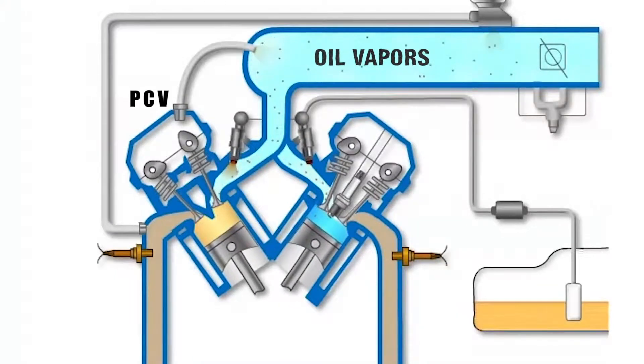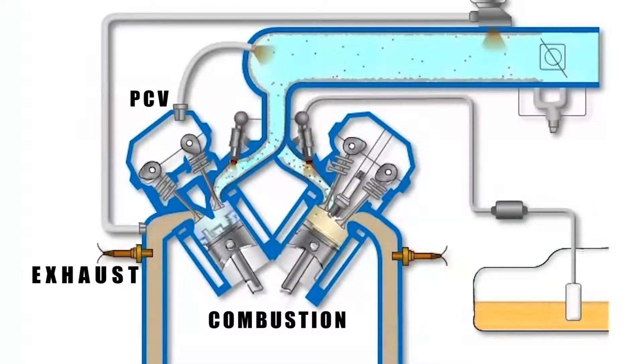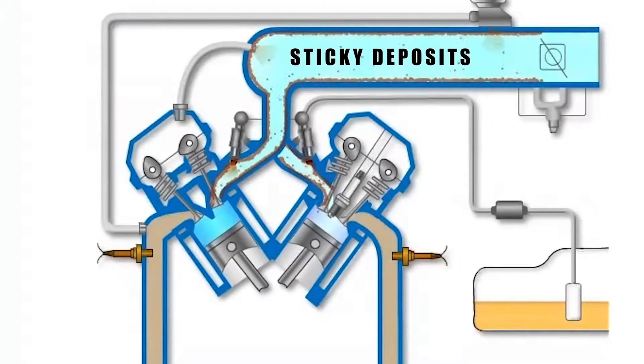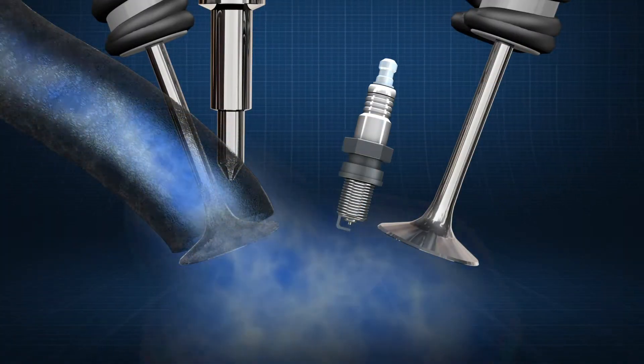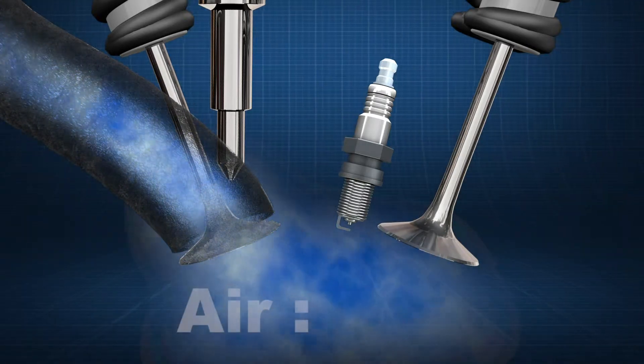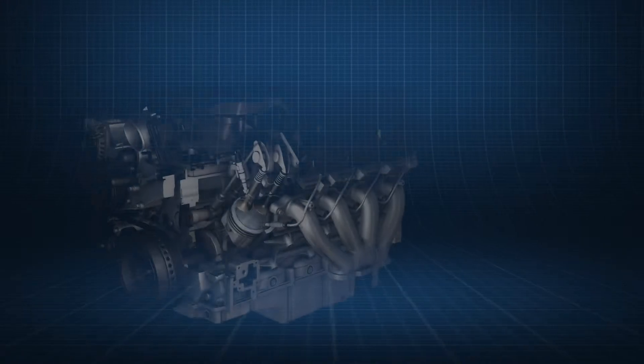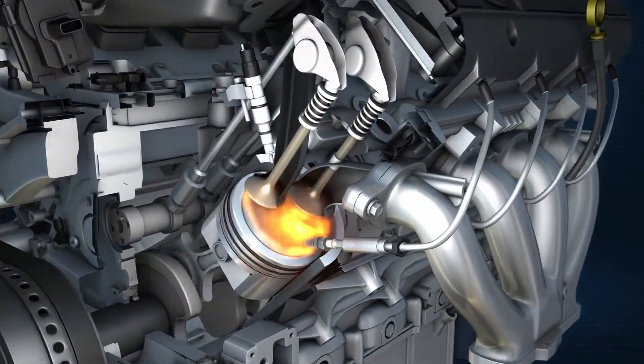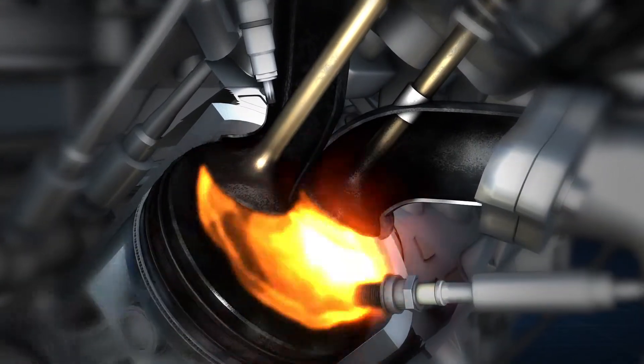Over time, oil vapors from the PCV and the combustion chambers along with exhaust gas from the EGR introduce sticky deposits that constrict the amount of air entering the combustion chamber, disrupting the critical air to fuel ratio used by the manufacturer. This causes timing issues and misfires which result in carbon buildup on valves and injectors.